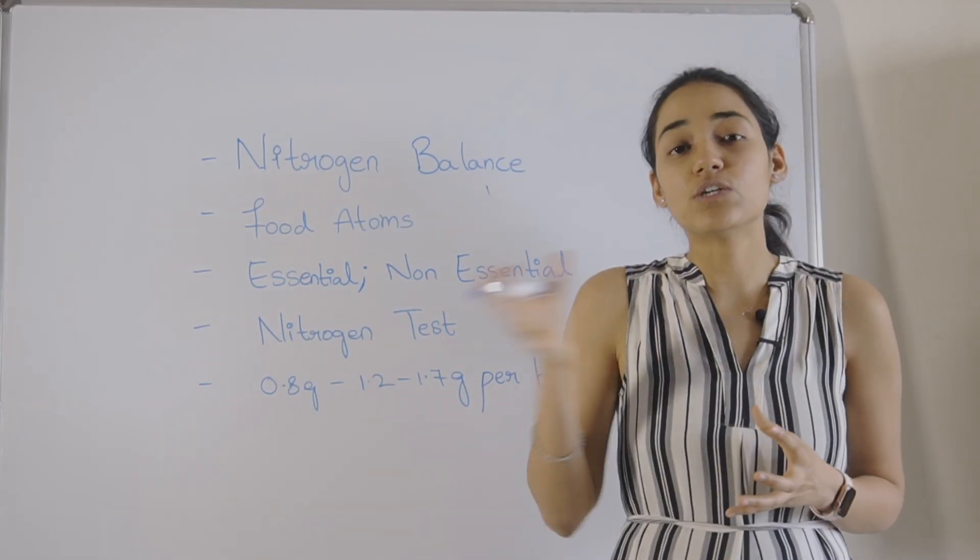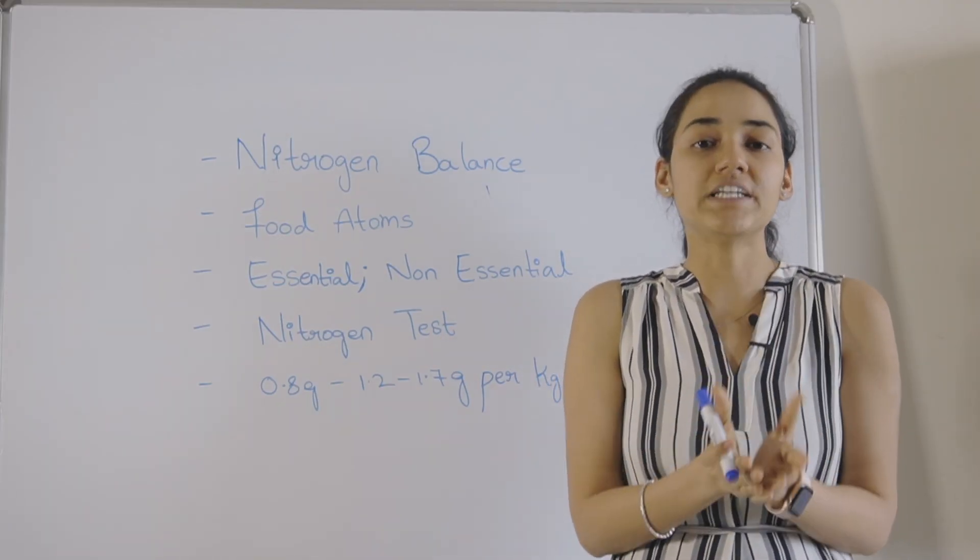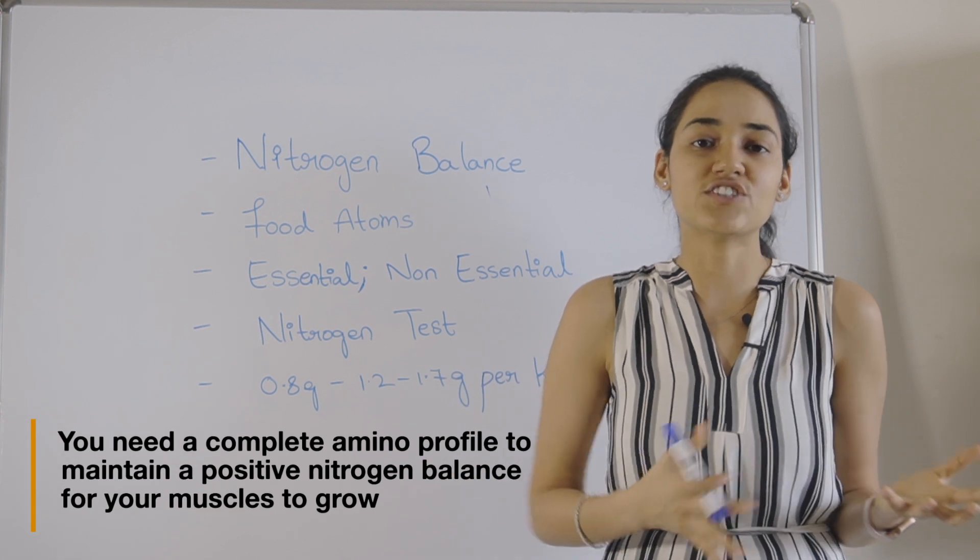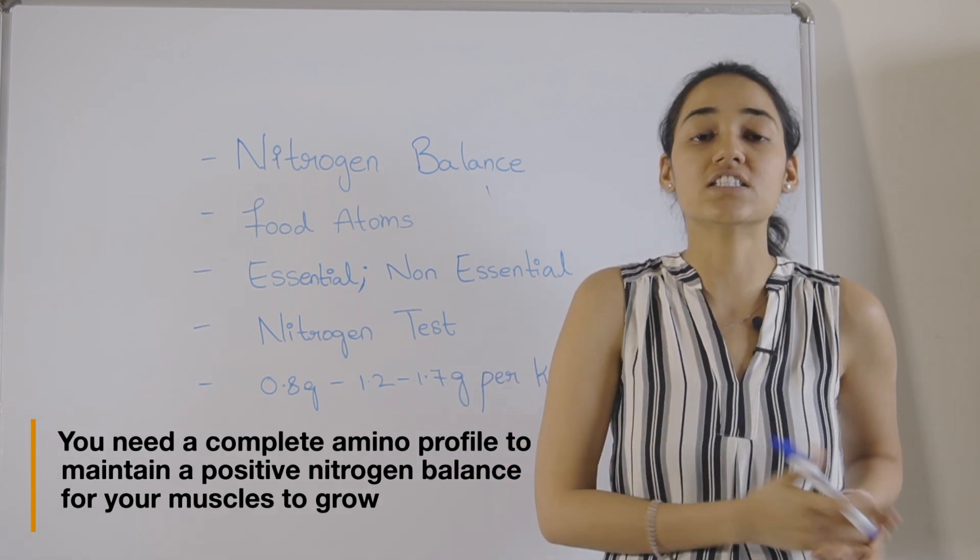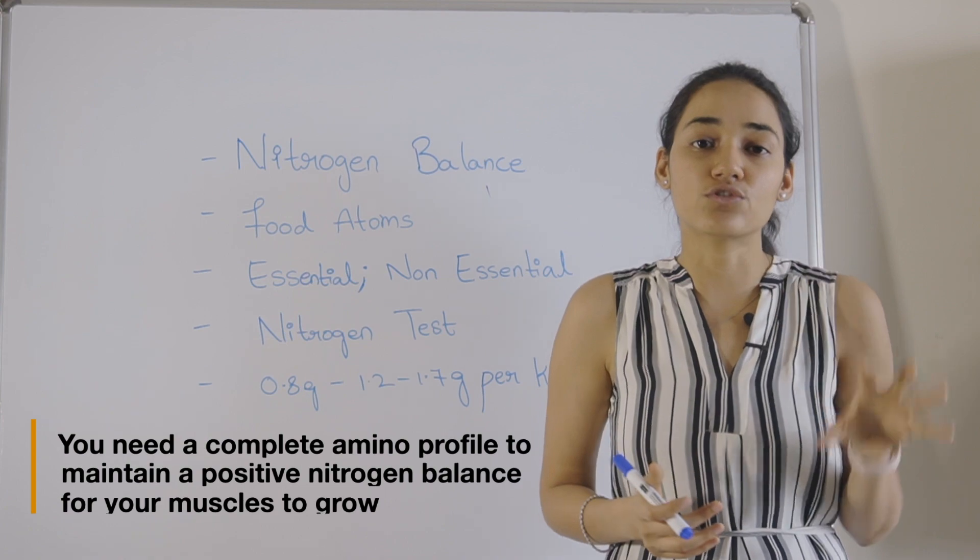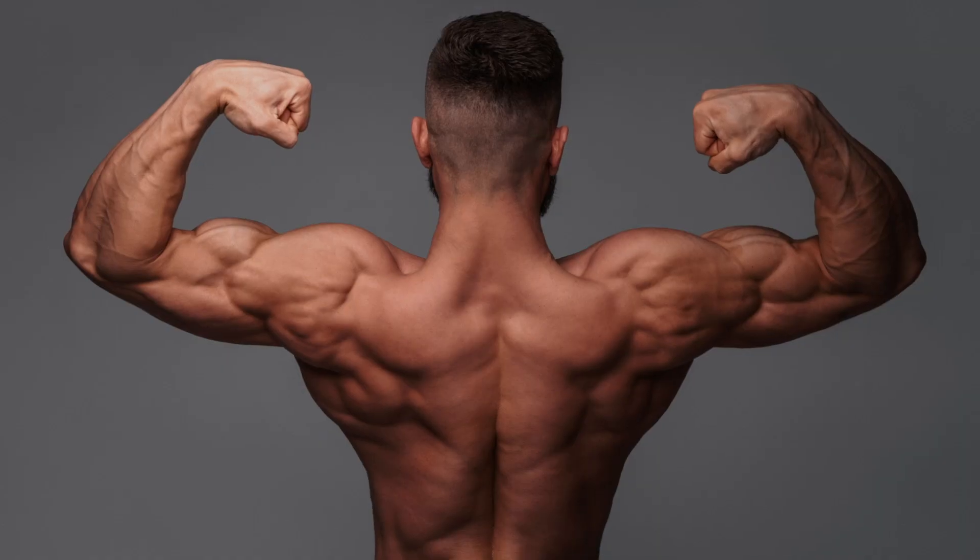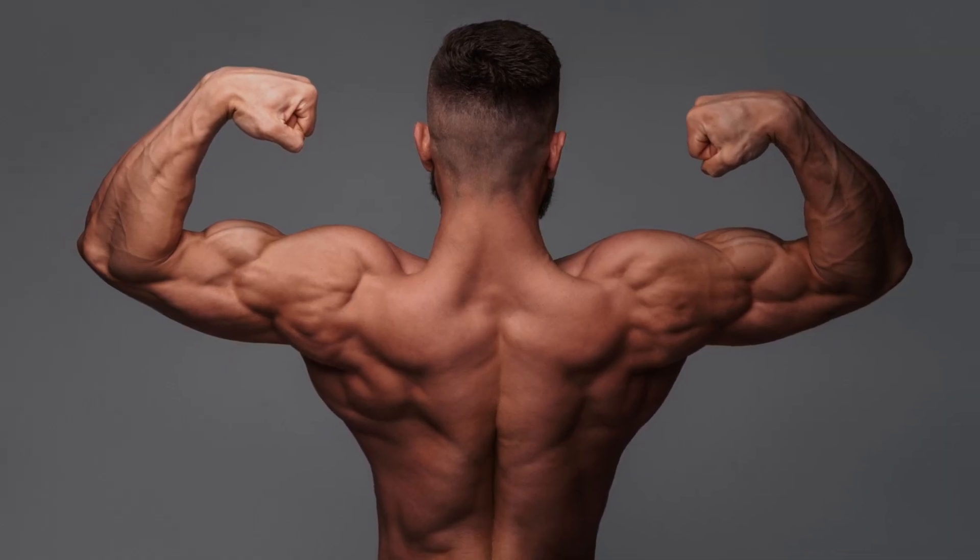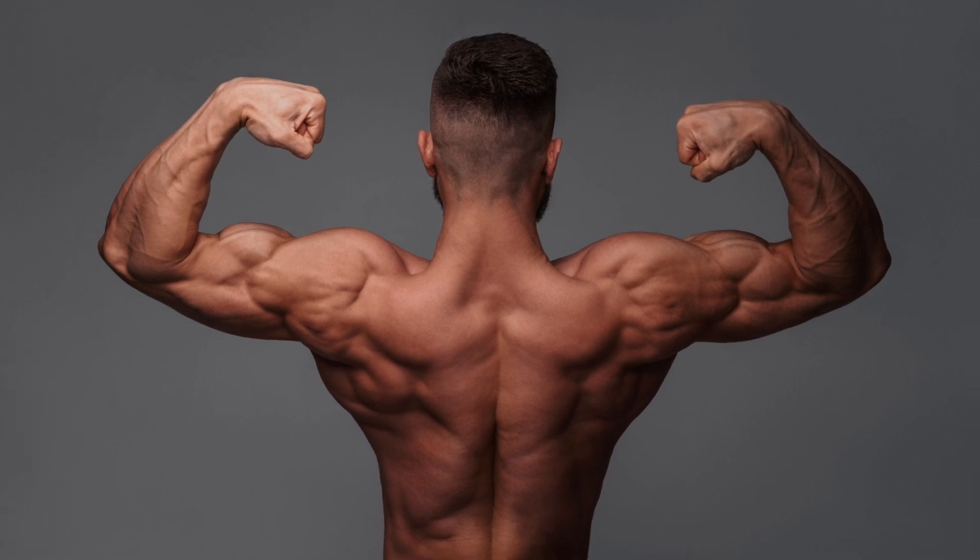When it comes to non-essential amino acids, it's equally important because you need a complete amino profile of both essential and non-essential amino acids to keep you in a positive nitrogen balance. That's when you start building muscle or basically an anabolic state when you're actually building muscle.